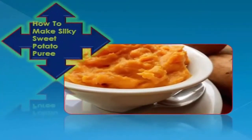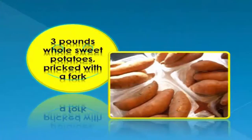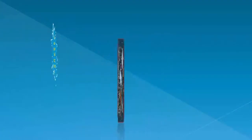How to make silky sweet potato puree: three pounds whole sweet potatoes pricked with a fork, a half teaspoon salt, and freshly ground pepper to taste.